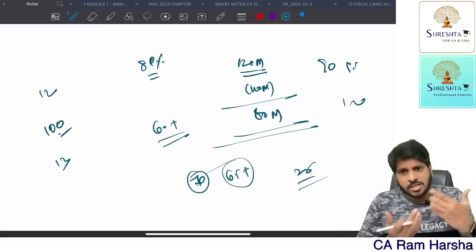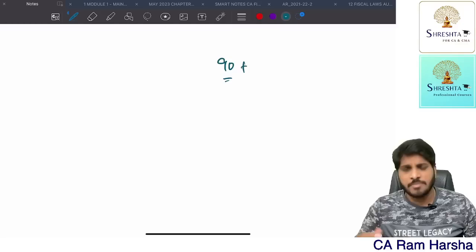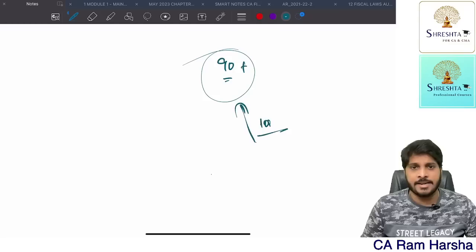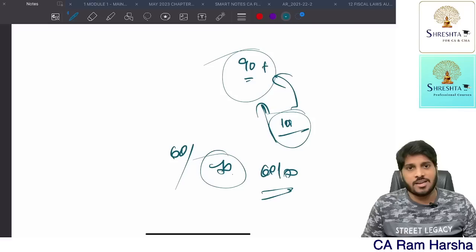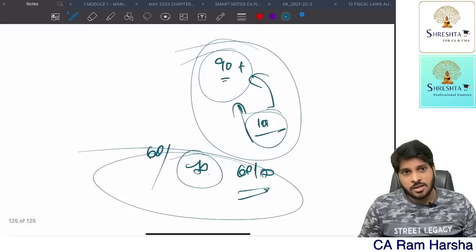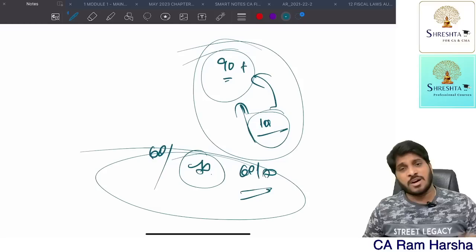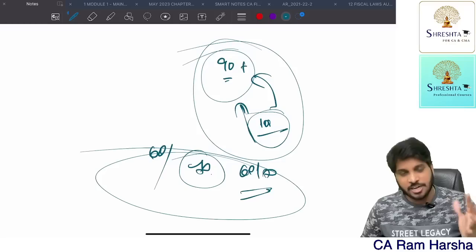What's the proof? Simple. I've seen many students scoring 90 plus in accounts, advanced accounts, costing, FM, FR and SFM. Many are scoring 90 plus. So for 100, they're scoring 90 plus. For 70, can't you score 60? Same logic. When they attempt 100 and score 90, why can't you score 60 by attempting 70? You're getting 50 marks not because you attempted for 100, because you attempted poorly. If you attempted excellently with 100% accuracy, you deserve 100% marks allocation.